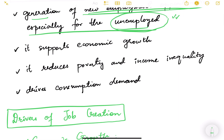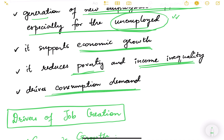What is the importance of job creation? It supports economic growth — if people have jobs, they get incomes, they spend in the market, demand in the economy increases, more production happens, and economic growth is supported. It also reduces poverty and income inequality, because income levels rise in a family when people are employed. It drives consumption demand, since once people get income they start consuming things.